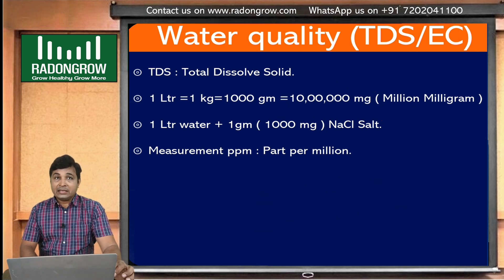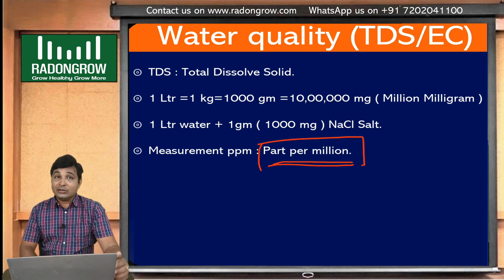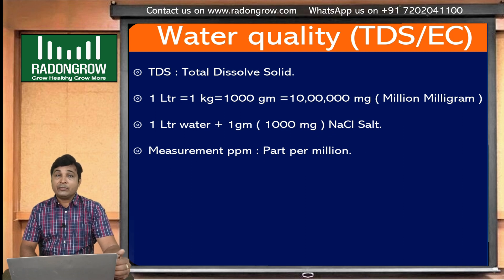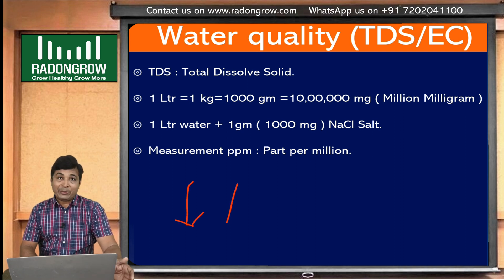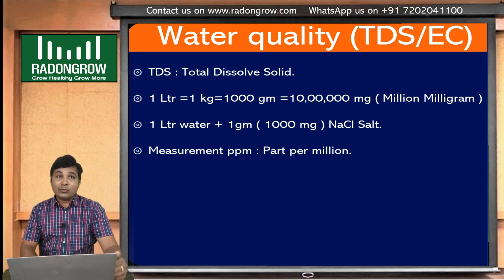By TDS, we are measuring in PPM — parts per million. More PPM means more dissolved solids. Low PPM means low dissolved solids. If you are adding more nutrient in your water, it will increase the PPM, increase the TDS, and increase the EC. If you are adding more pure water, it will decrease the PPM, decrease the TDS, and decrease the strength of the nutrient solution.